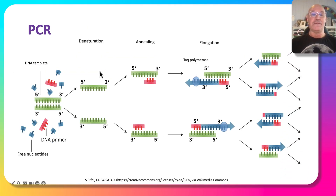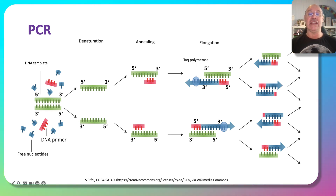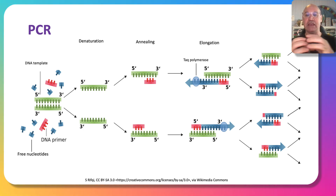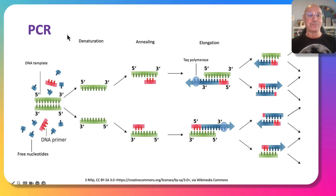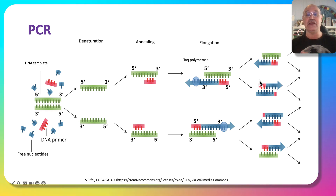There are three steps in PCR. First is denaturation, which splits the DNA strands apart. The next step is annealing, where the primers attach. Then comes elongation, where DNA polymerase inserts and adds the nucleotides. After one complete cycle we have two double strands of DNA — semi-conservative replication. The process is then repeated again and again.